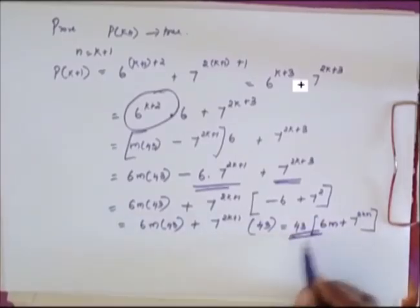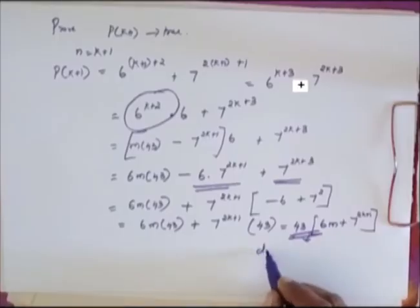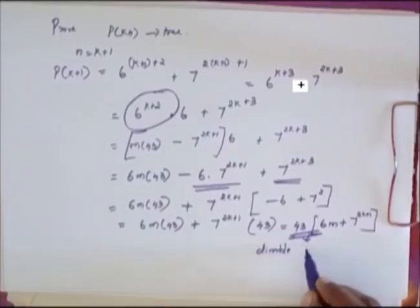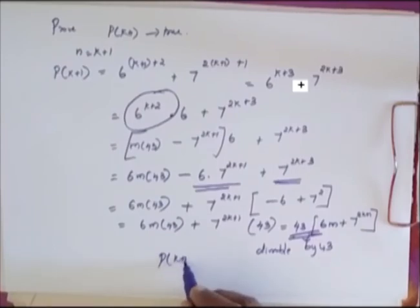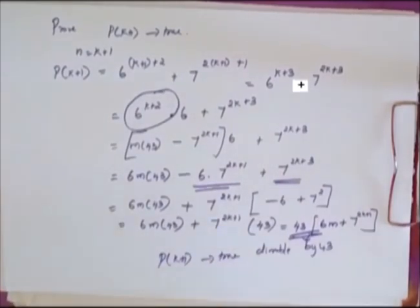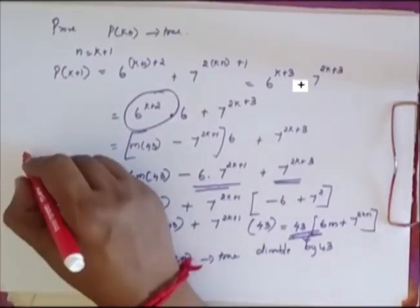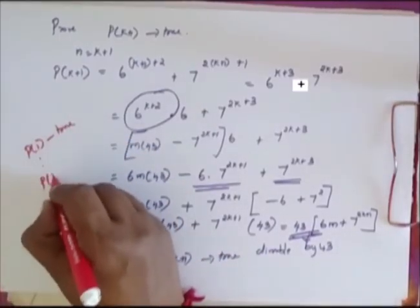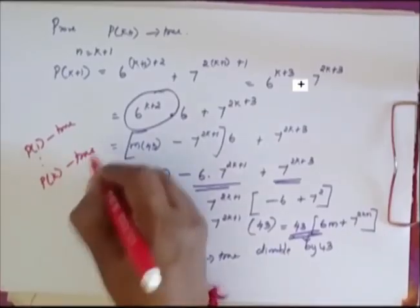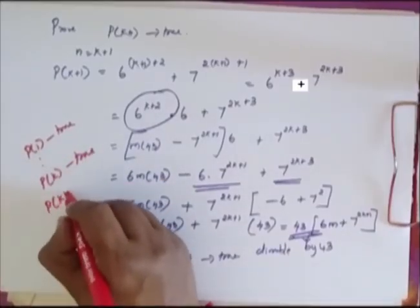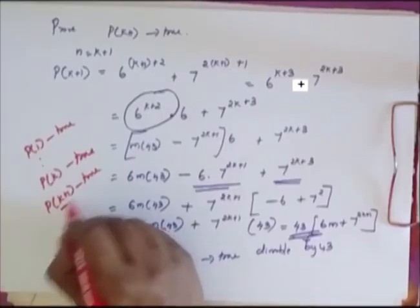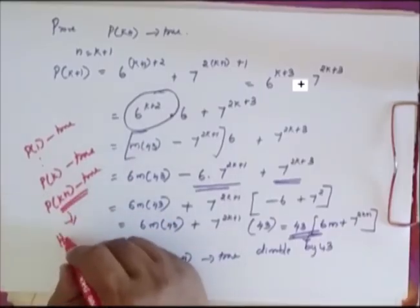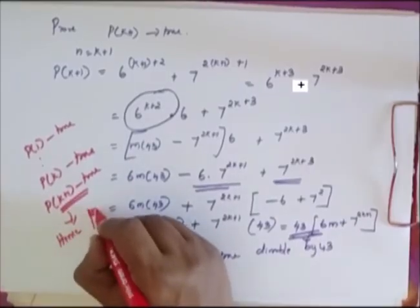This is a multiple of 43, so it is divisible by 43. Hence P of K plus 1 is true. Since we have shown P of 1 is true and P of K plus 1 is true whenever P of K is true, the statement holds for all positive integer values of n.